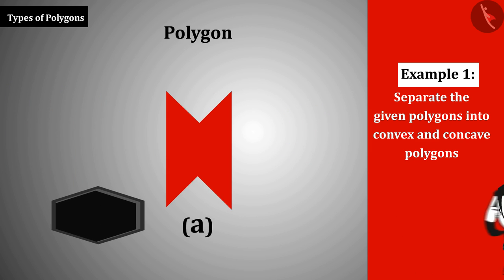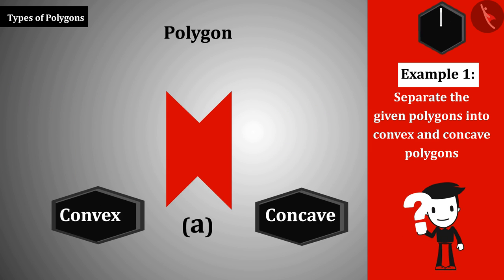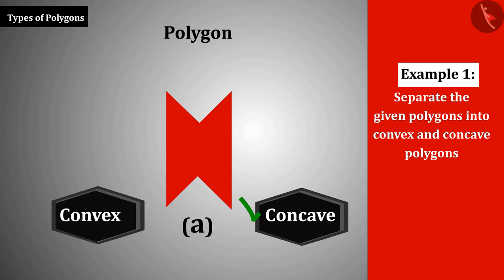Is polygon A convex or concave? Perfect! It is a concave polygon because when we draw the diagonal of the polygon,